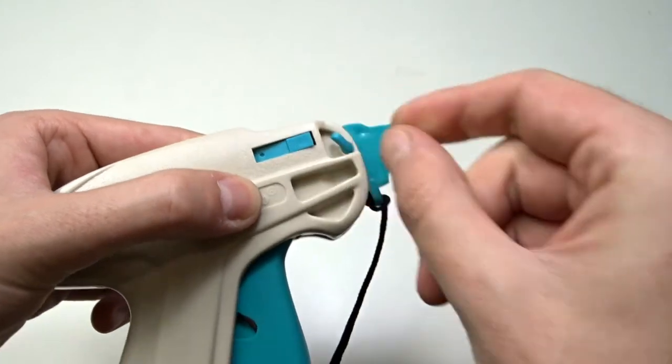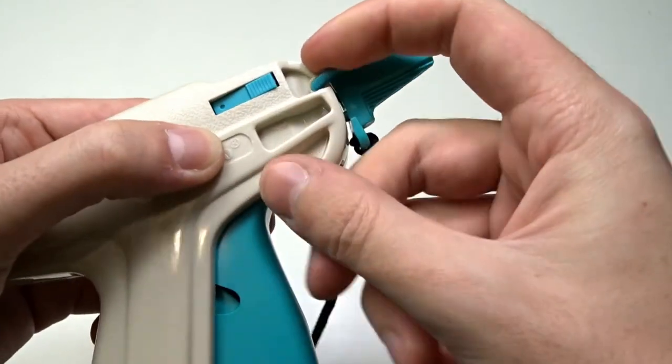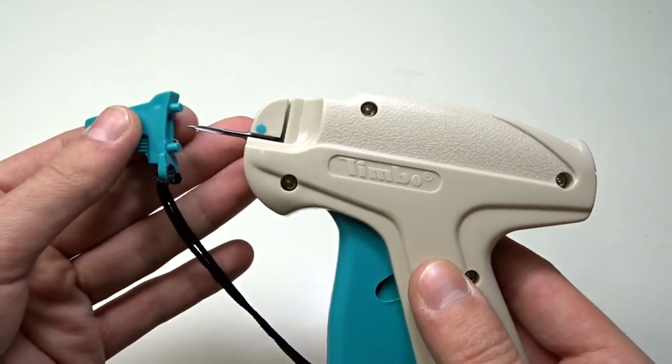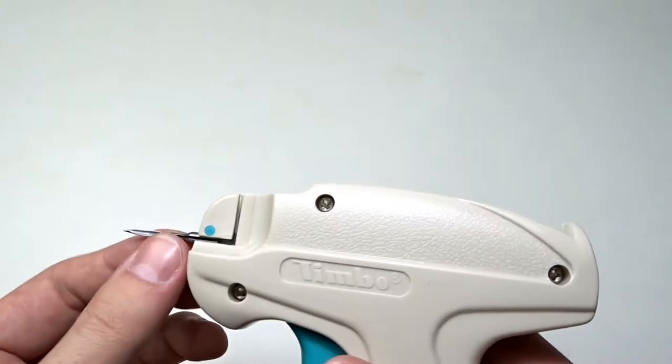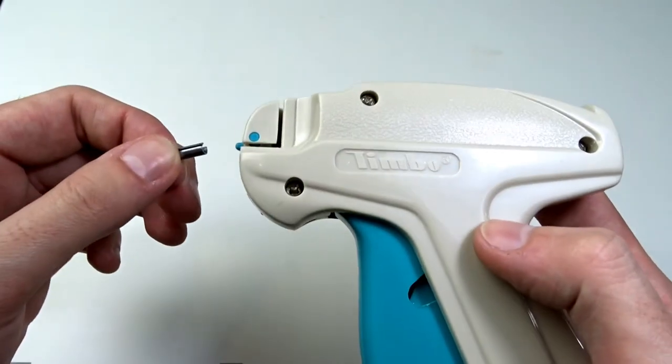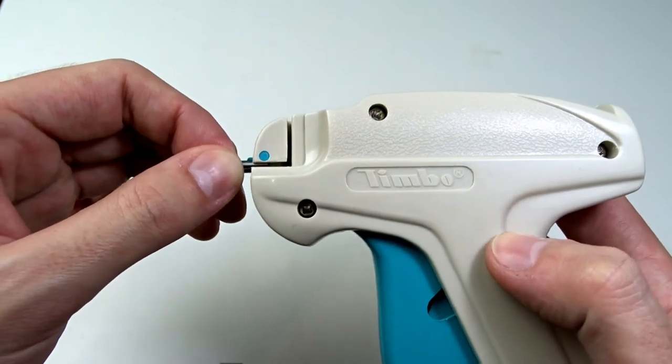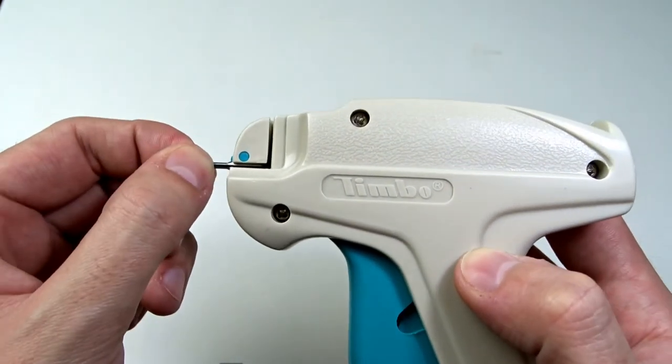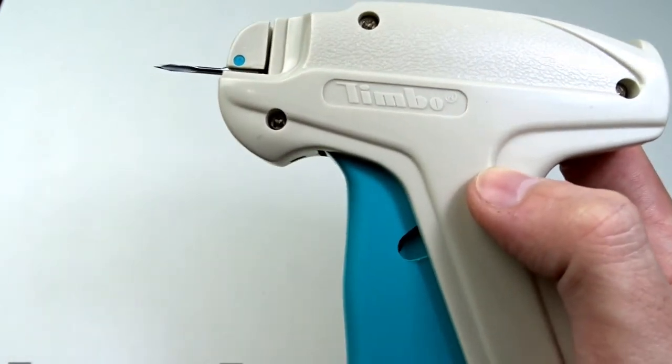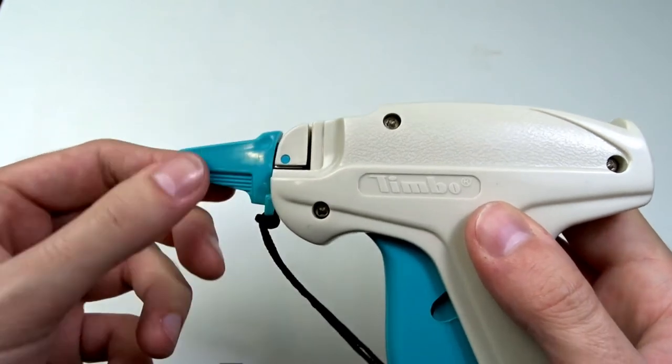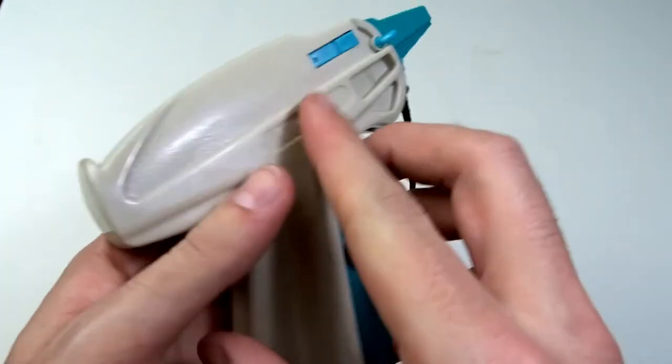To remove the needle turn the small lever, remove the safety cap and pull the needle out. To install a new needle make sure the small lever is rotated towards the front of the gun. Align the slot on the needle and push the needle as far as it will go. Close the safety cap to be sure that the needle is inserted to the end and rotate the lever towards the back of the gun.